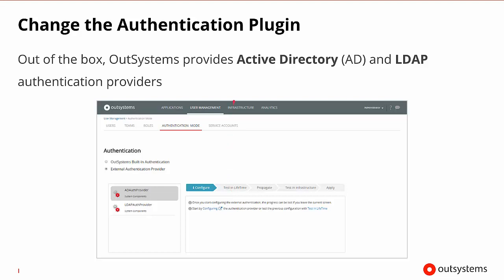We could also go in and change the authentication plugin. Out of the box, OutSystems provides an Active Directory and an LDAP authentication provider. To choose one of these, we just have to select them from the list and begin to configure that authentication provider. Here you can see we need to select that we're using an external authentication provider for this to actually become active. By default, we have the OutSystems built-in authentication selected.